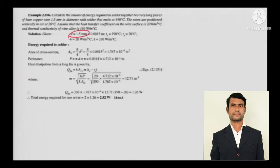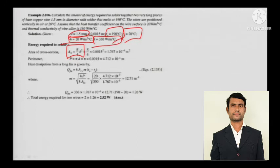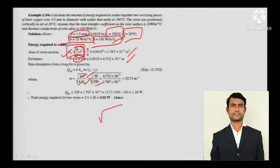Given: diameter is used to calculate cross-sectional area. Base temperature is 190°C, ambient temperature is 20°C, convective heat transfer coefficient and thermal conductivity are given. The cross-sectional area is (π/4)d² and perimeter is πd. With h, P, k, and A known, the fin parameter M = √(hP/kA). Then Q = √(hPkA) × (T₀ − T_A).